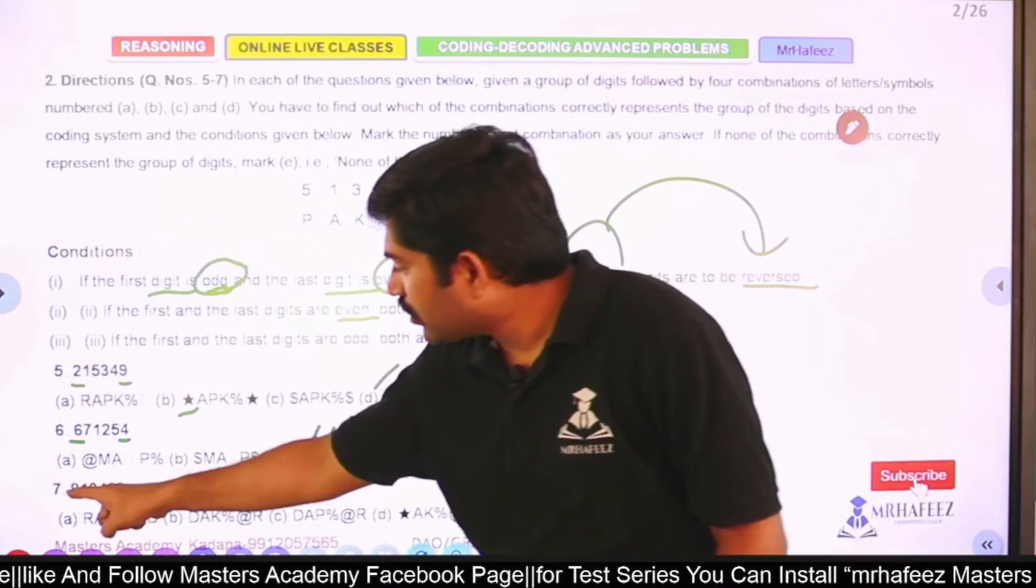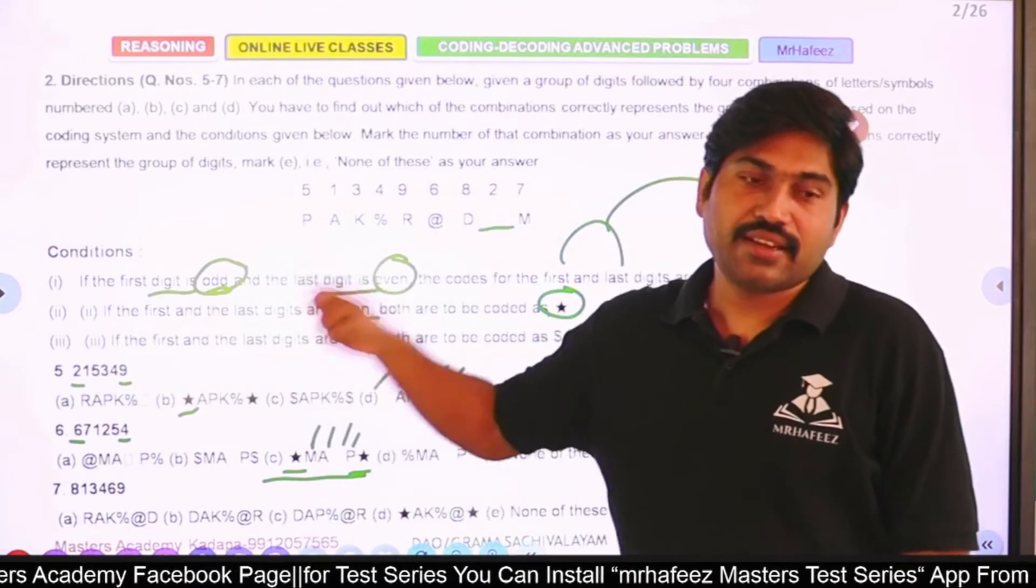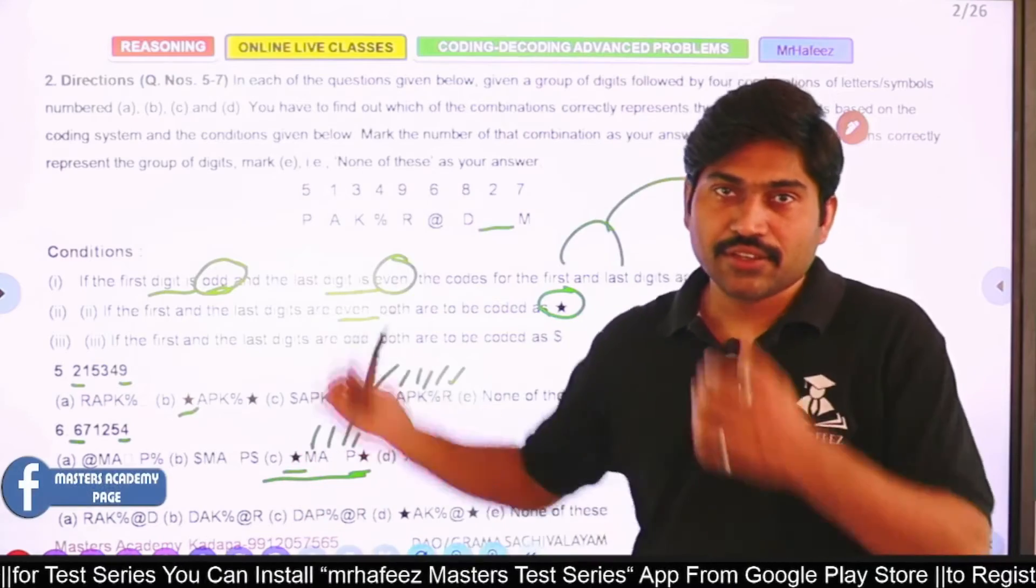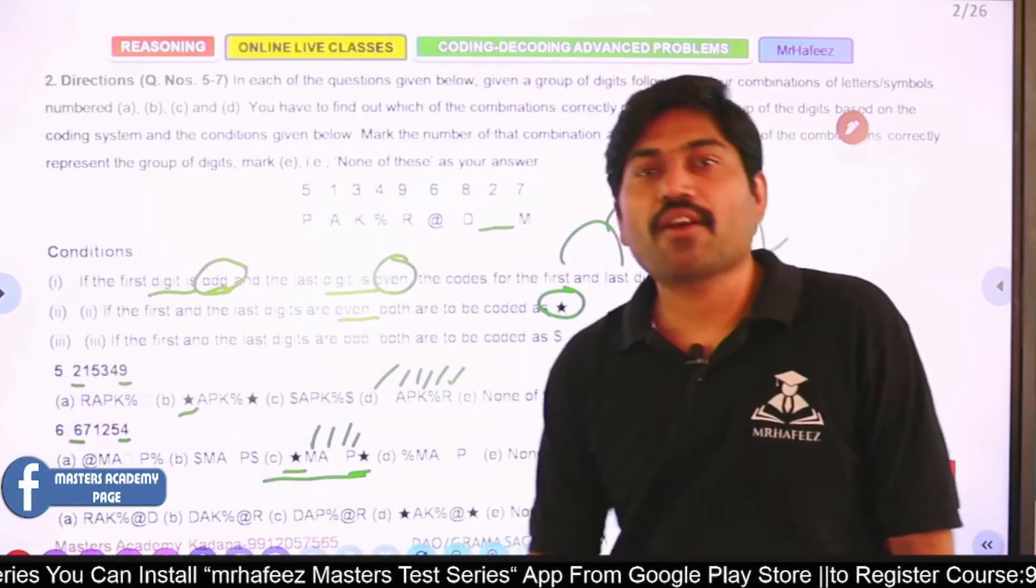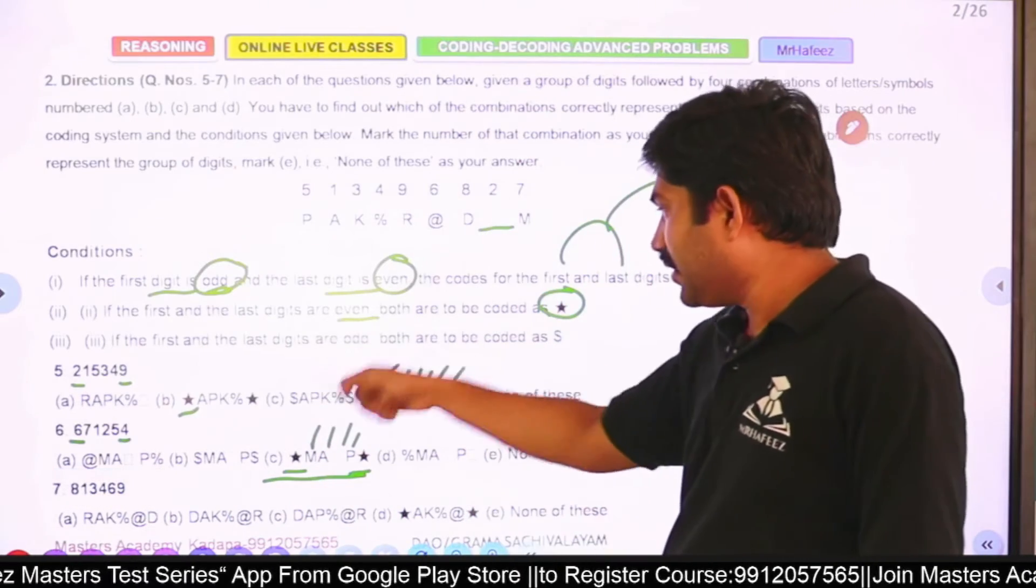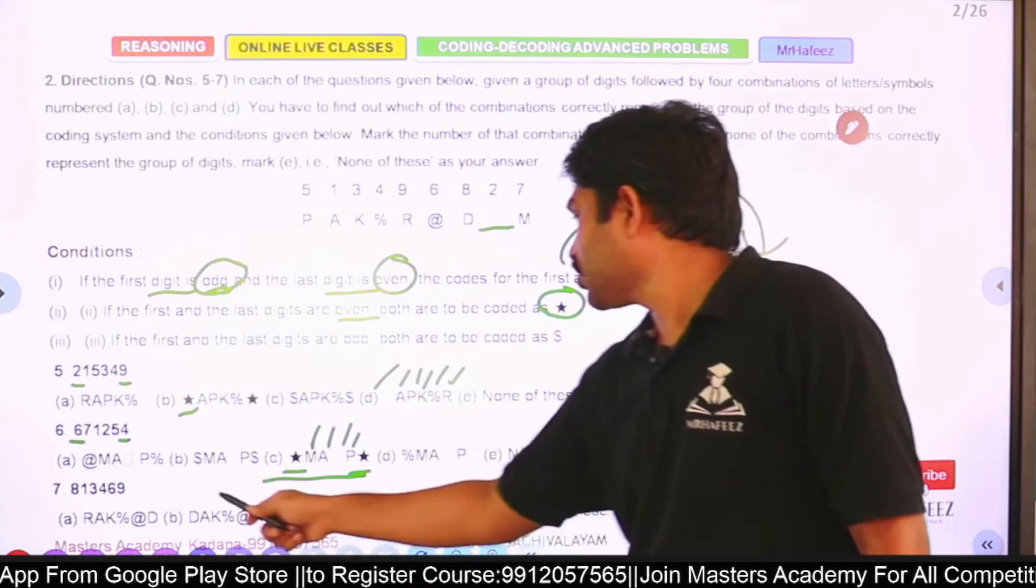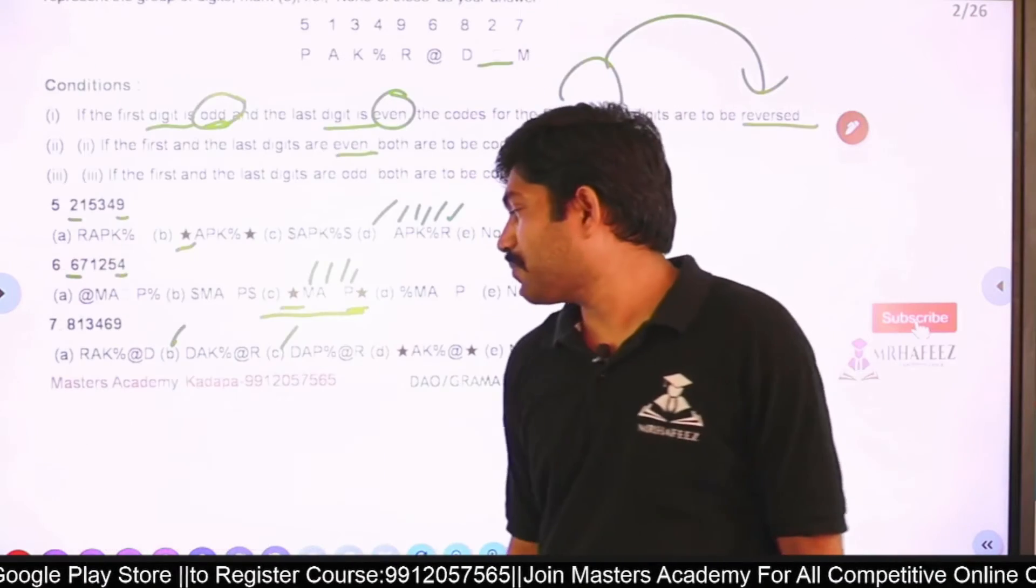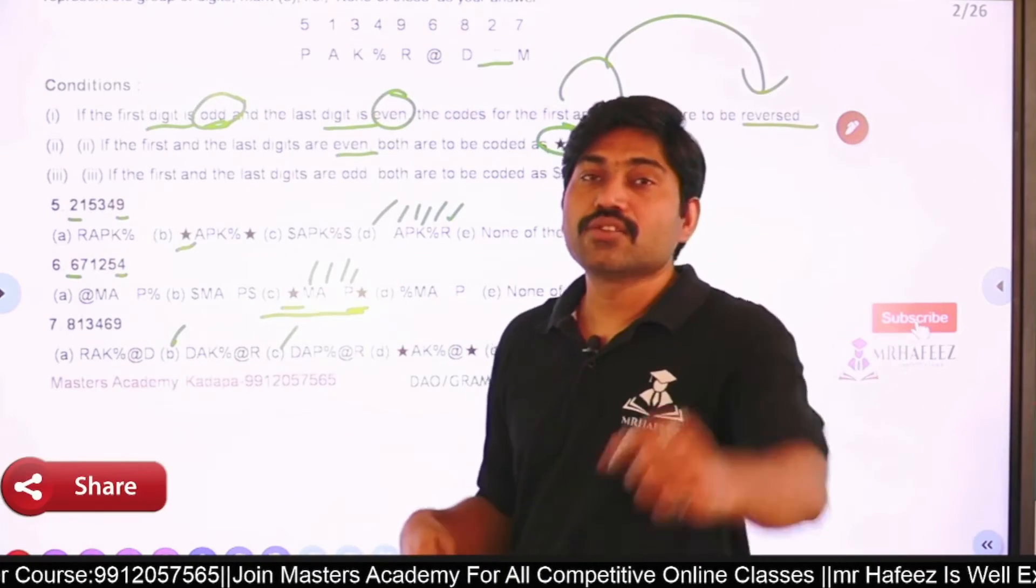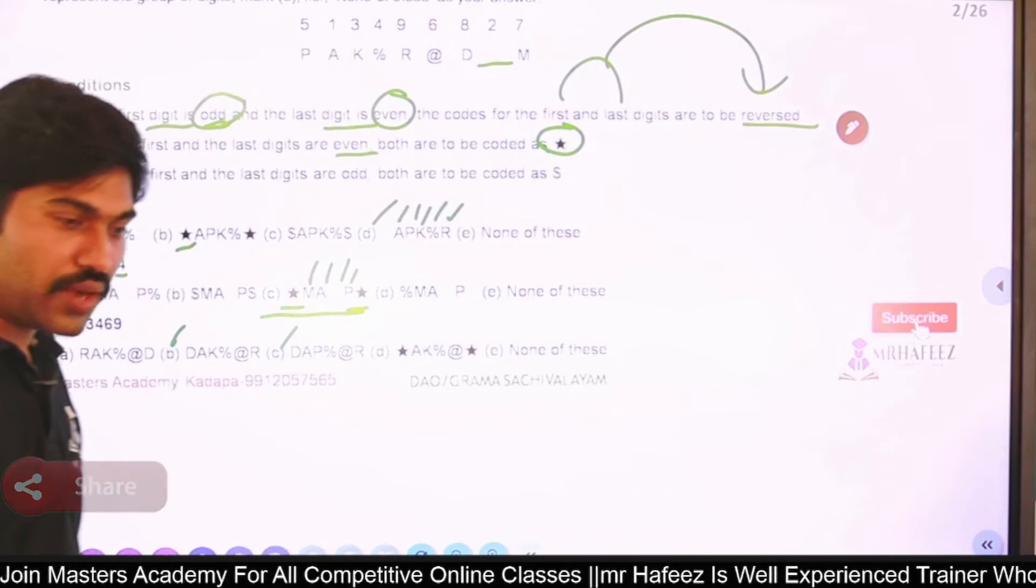Moving to the next question. Next question is 8, 1, 3, 4, 6, 9. First is even, last one is odd. First is even, last one is odd. There is no condition for that. You should directly depend on it. So 8 is D - sorry, first one should be D. And 9 is R. D and R - B option, C option, chances are there. Let me know what is the answer. Madhavi is telling it's B.